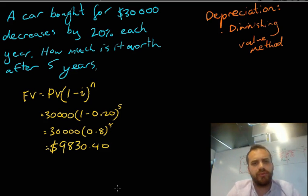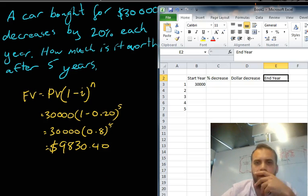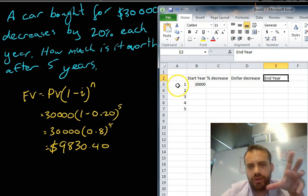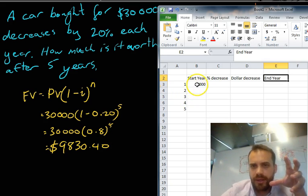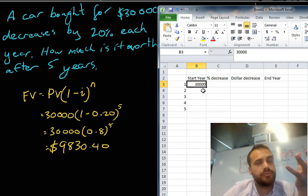I might just show you, just before we finish up, I might just show you what's actually happening with this car. It's probably going to be a bit useful. I'm just going to use Excel here to show you what I meant here. Now, at the start of the year, it was worth... At the start of the year, it was worth $30,000.